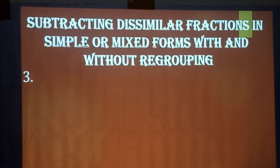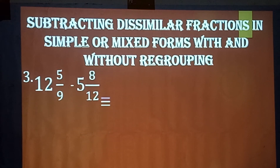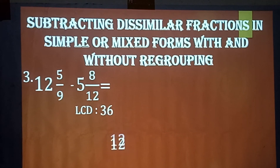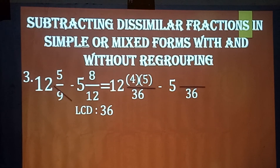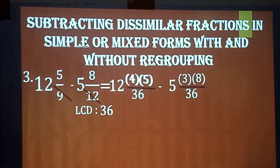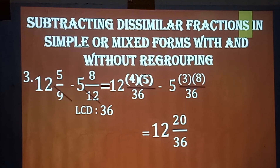Number three: 12 and 5/9 minus 5 and 8/12. The LCD is 36. Copy the whole number, then 36 divided by 9 is 4, times 5; minus copy the whole number, 36 divided by 12 is 3, times 8. So 4 times 5 equals 20 over 36, and 3 times 8 equals 24 over 36.